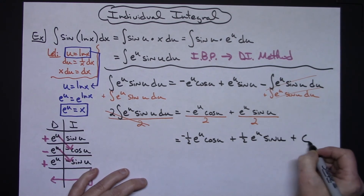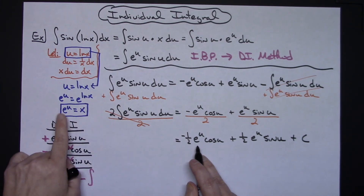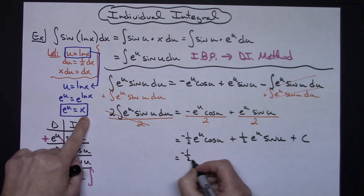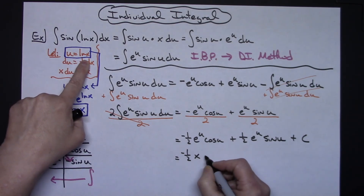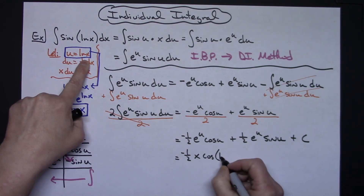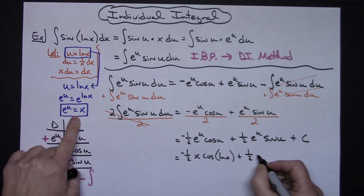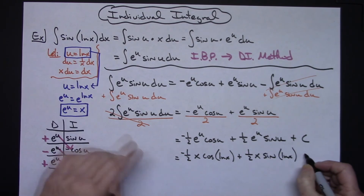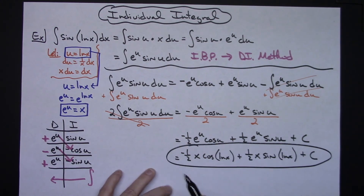At this point I can go ahead and add plus C. Now let's substitute back in terms of x. e to the u is x, and u is natural log of x. So the final answer is negative one-half x cosine(natural log of x) plus one-half x sine(natural log of x) plus C.